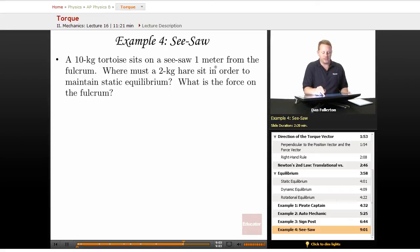A 10-kilogram tortoise sits on a seesaw one meter from the fulcrum. Where must a 2-kilogram hair sit in order to maintain static equilibrium? And what is the force on the fulcrum?